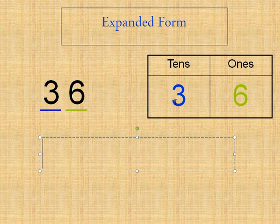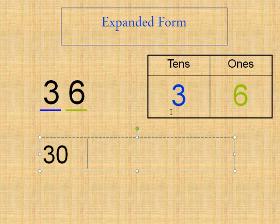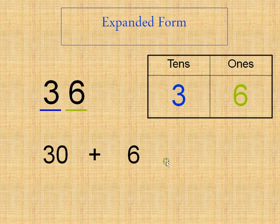Three tens, the value of that is 30. If I have three groups of 10, I have 30. And six ones are just six. So in expanded form, 36 is 30 plus 6.